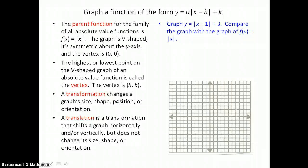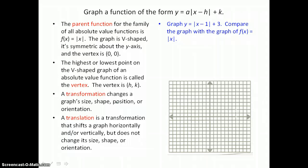In this first example, we're going to graph y equals the absolute value of x minus 1 plus 3 and compare that graph with the graph of the parent function f of x equals the absolute value of x. To graph this absolute value equation, we want to make a table of values.